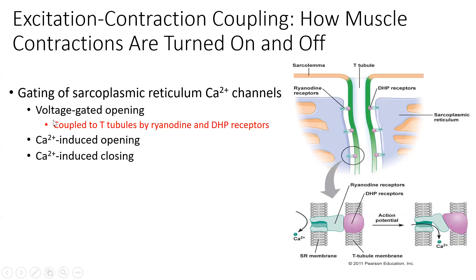We have this coupling of ryanodine receptors and DHP receptors — two receptors found studded on the membrane of the SR as well as the plasma membrane, or the sarcolemma itself. So the sarcolemma is the membrane of the muscle fiber, and the sarcoplasmic reticulum membrane is where calcium is being stored.